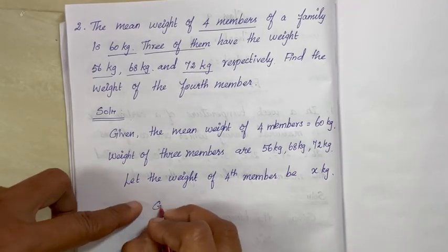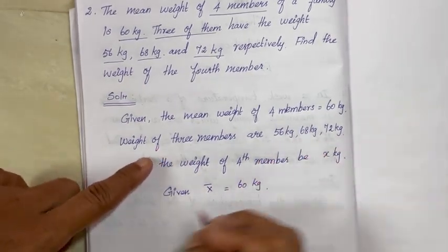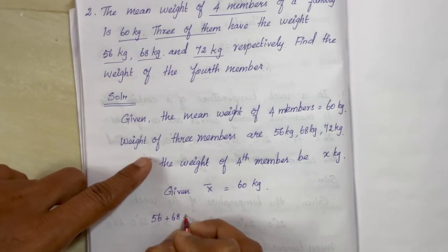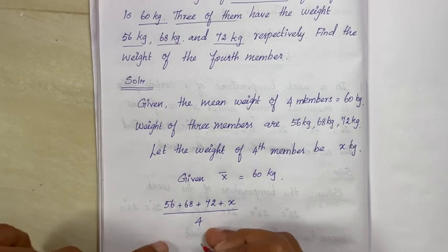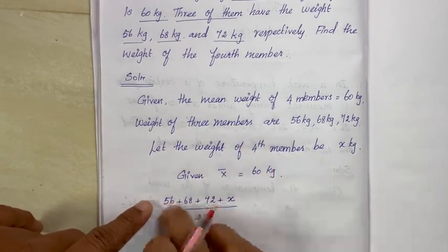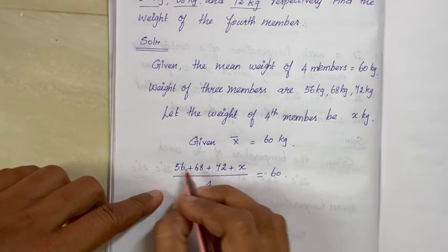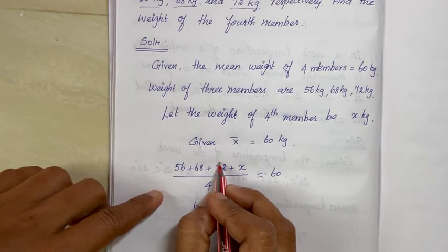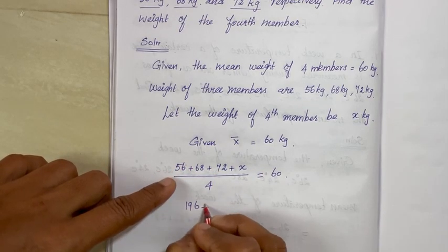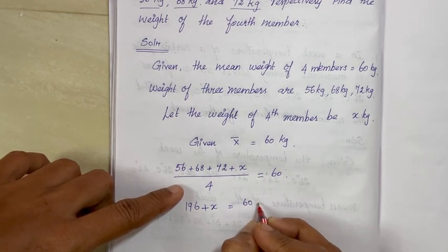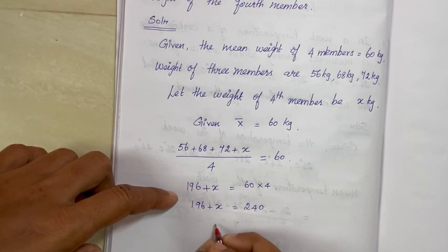Average is given as 60 kg. So x-bar equals 60, that is: 56 plus 68 plus 72 plus x, divided by 4. Sum of all weights of 4 members equals 60 cross-multiplied. Adding: 56 plus 68 plus 72 equals 196. So 196 plus x equals 240.